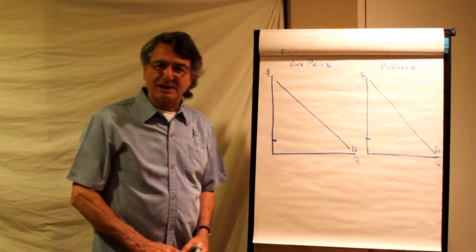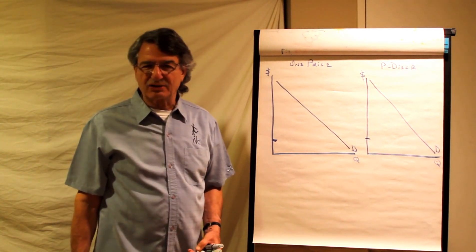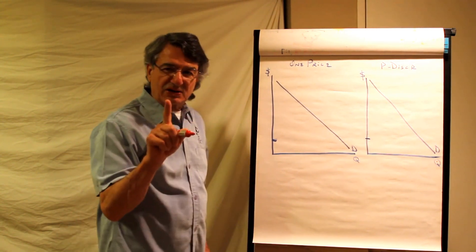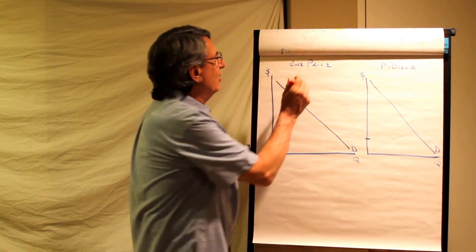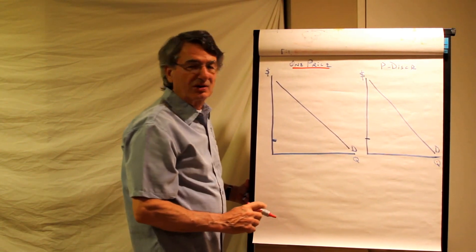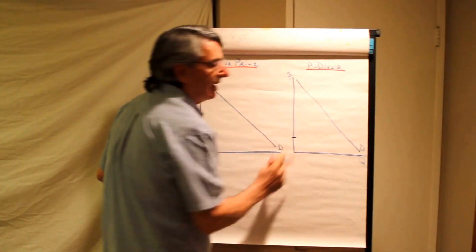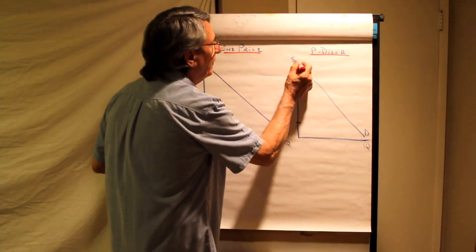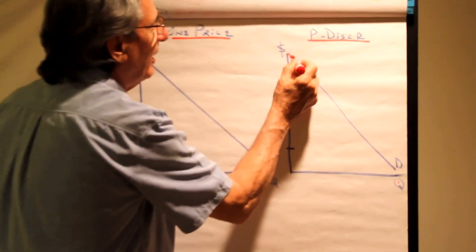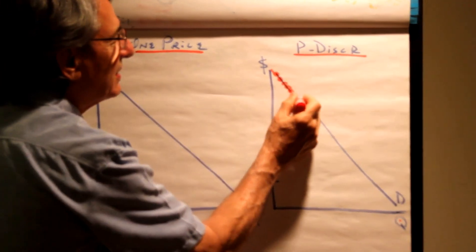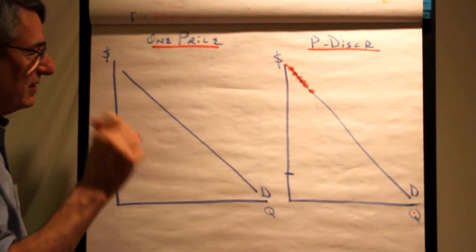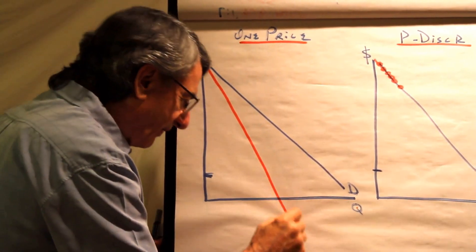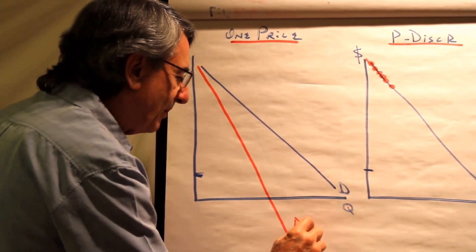Here we are in beautiful Baja Tustin at the McNeil International Film Studios headquarters. The topic is a price searcher who charges one price compared to a price discriminating price searcher. In this case we're talking about perfect price discrimination where everybody gets charged the highest price they're willing to pay versus a firm that cannot price discriminate and must charge everyone the same price.